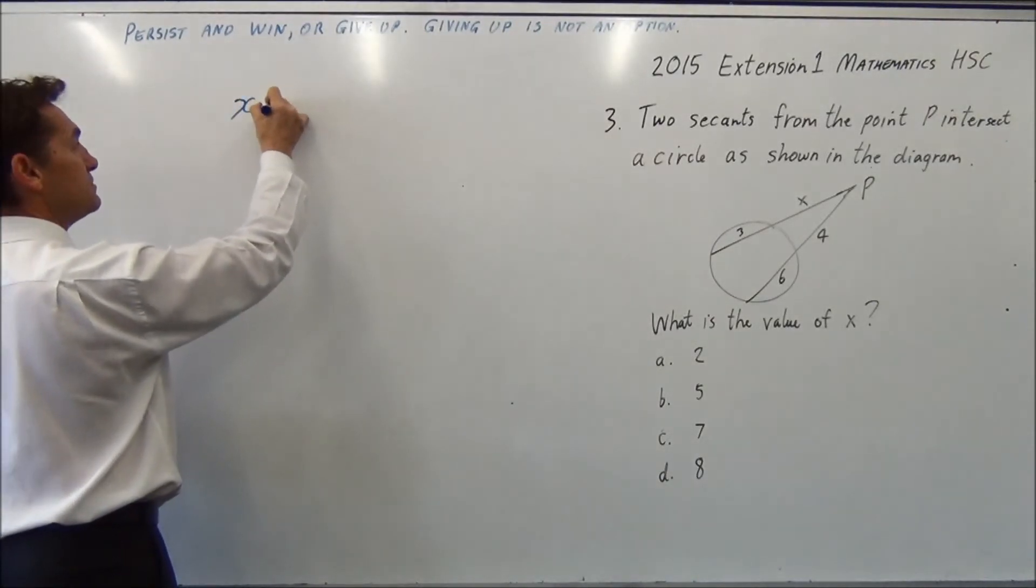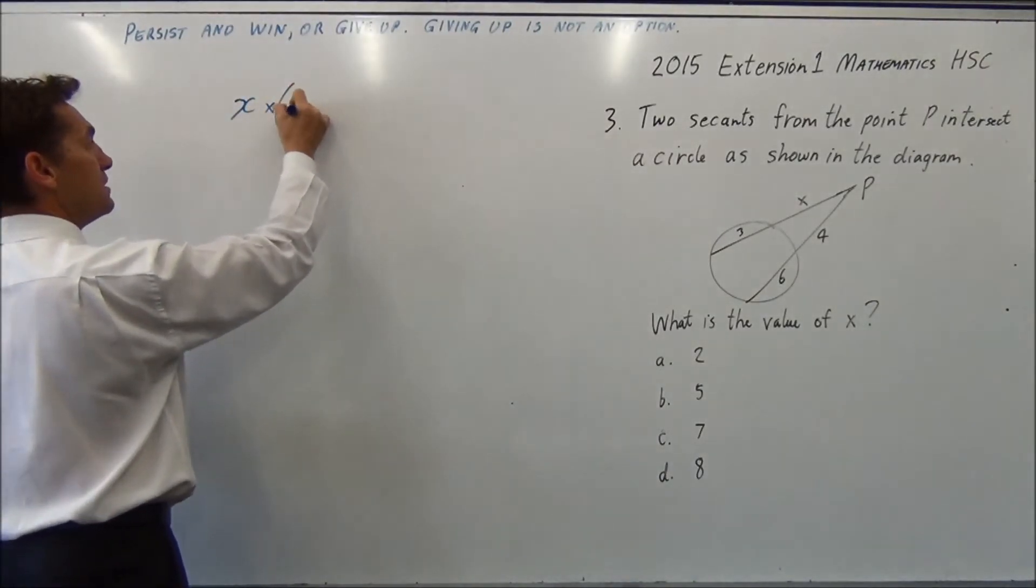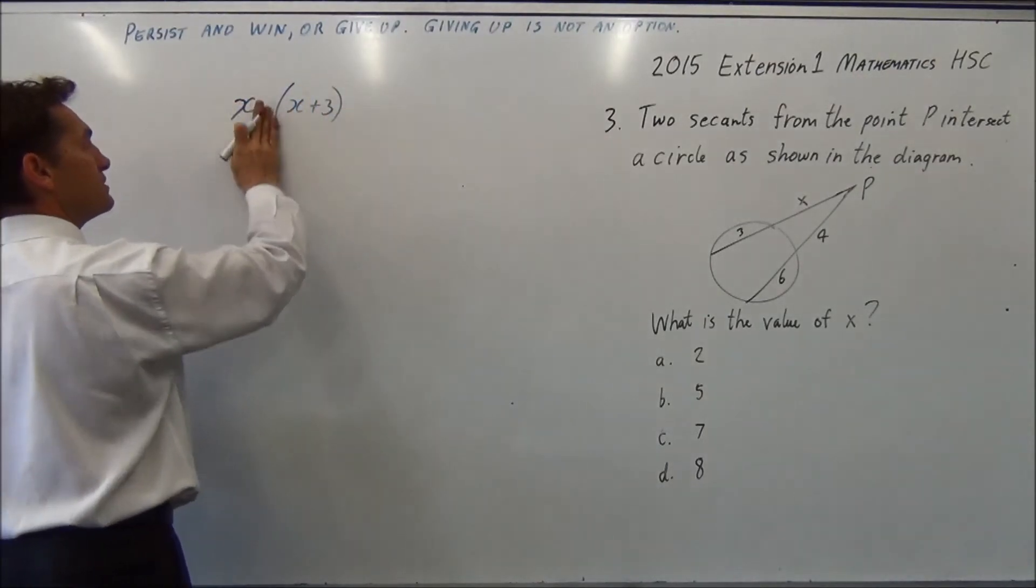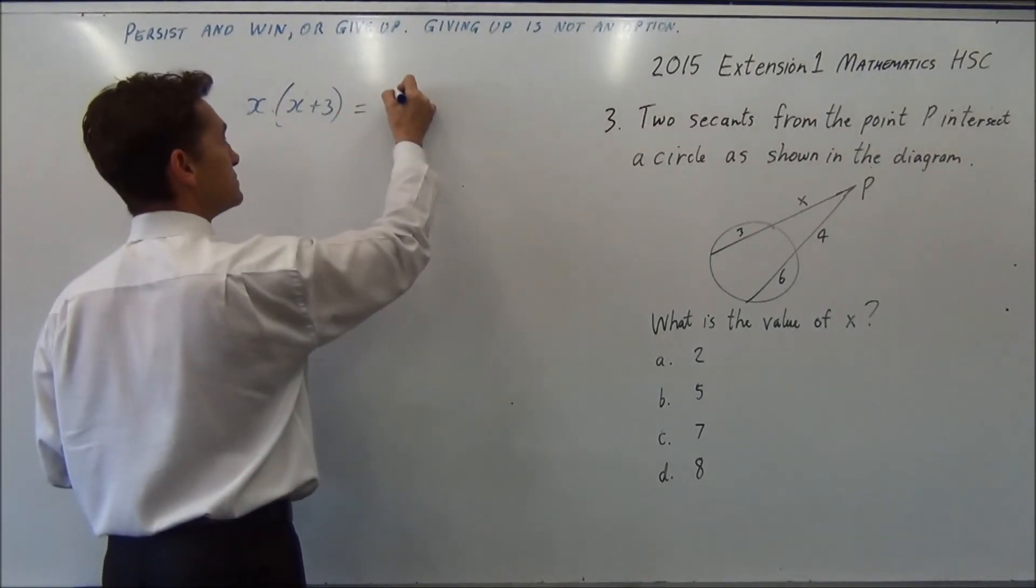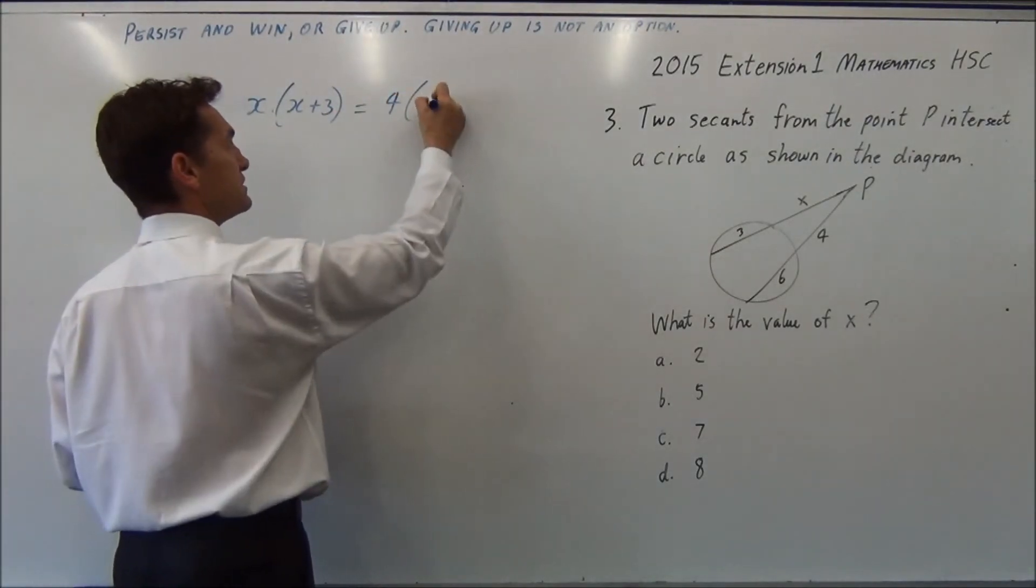So x multiplied by x plus 3, we'll get rid of that so I don't get confused, equals 4 multiplied by 4 plus 6 is 10.